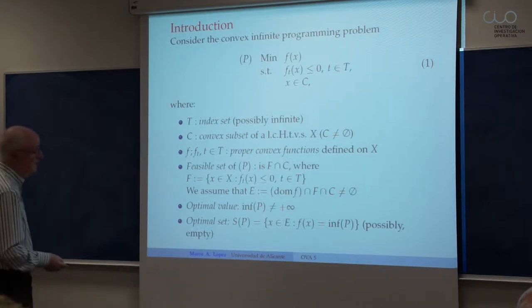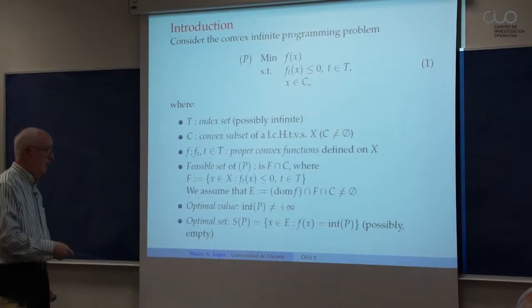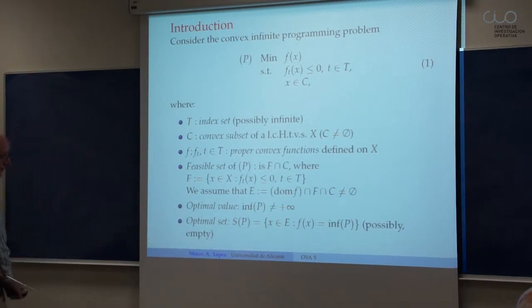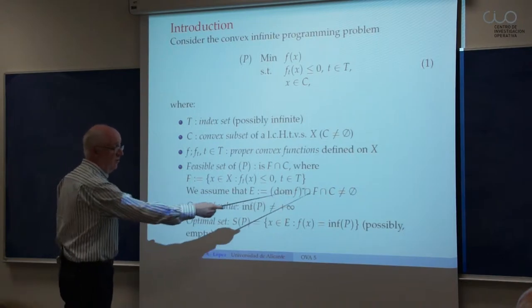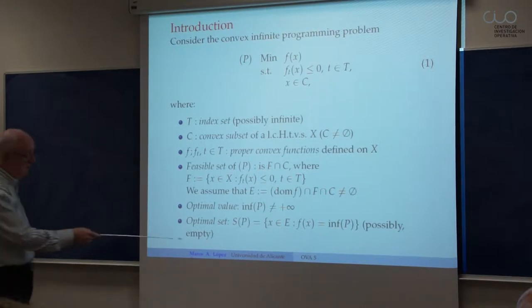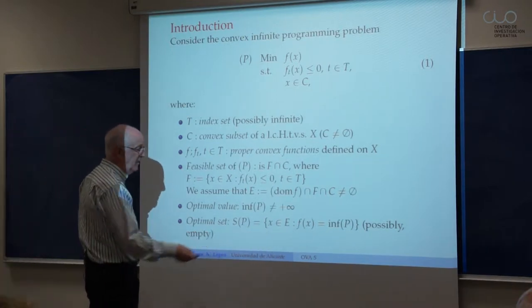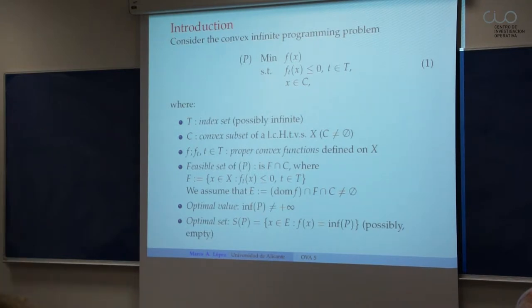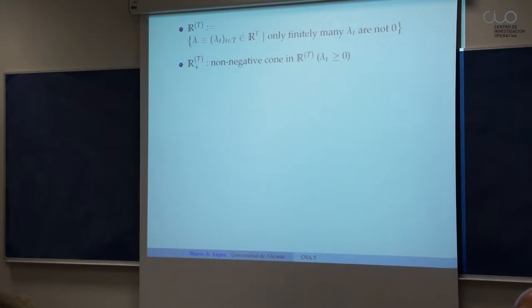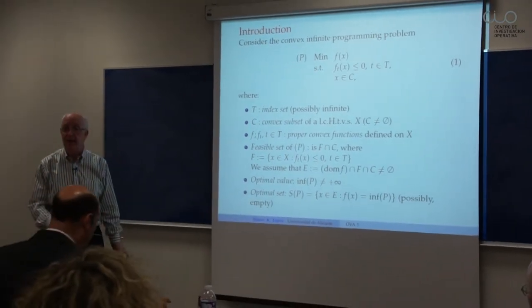The feasible set is the intersection of C — the abstract constraint — and the set of points satisfying infinitely many inequality constraints. We assume, in order to guarantee that the infimum cannot be plus infinity, that the intersection of the feasible set with the effective domain of f is non-empty. The optimal set S of P is the set of points in X at which the optimal value is attained. This set can be empty.